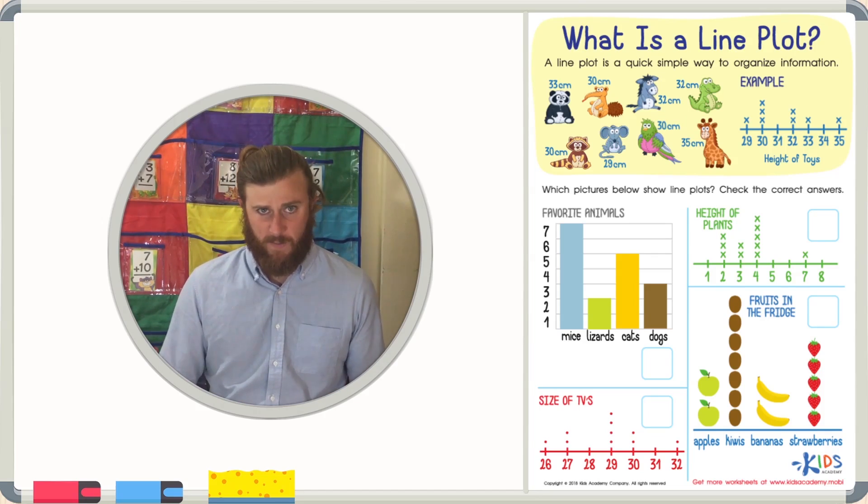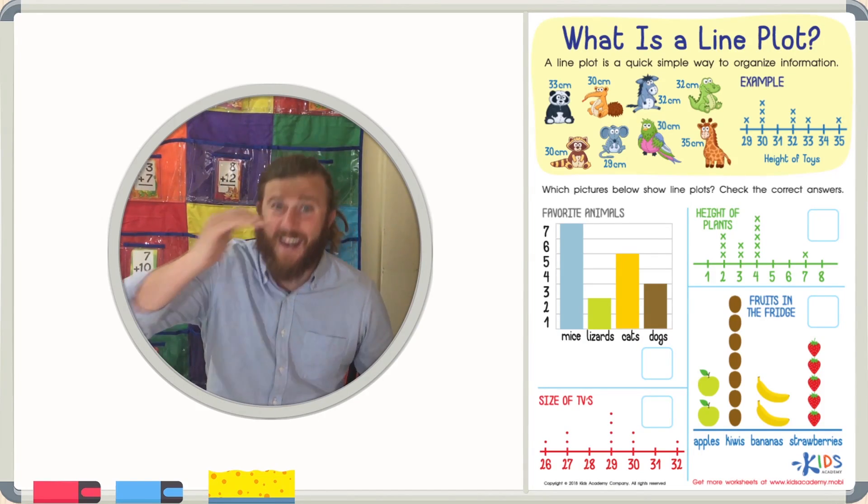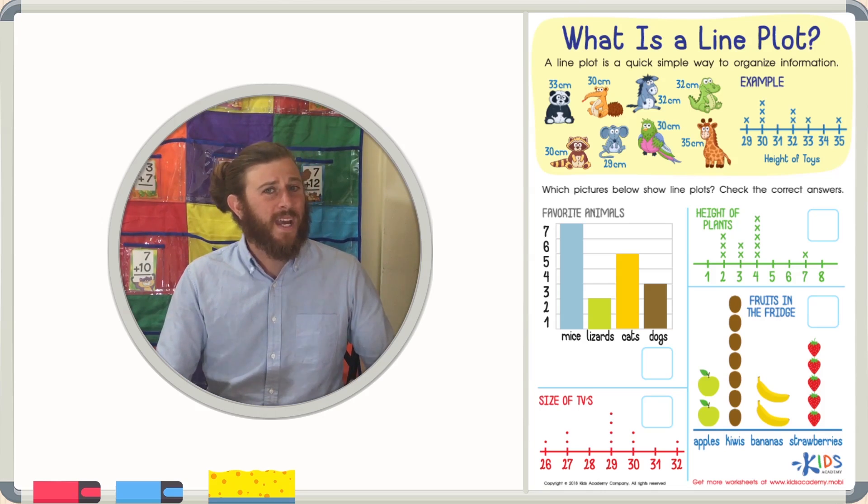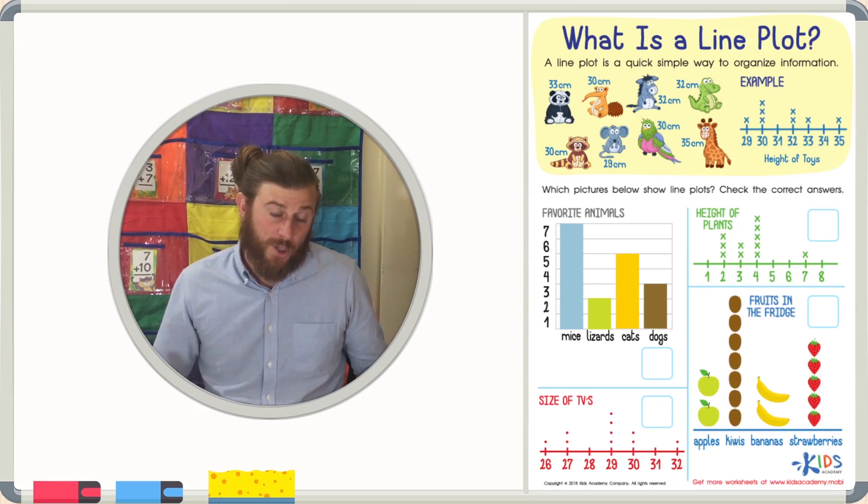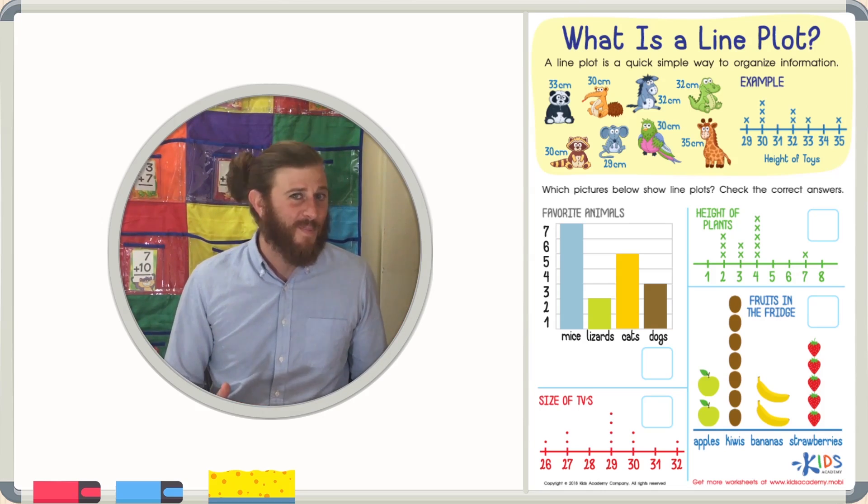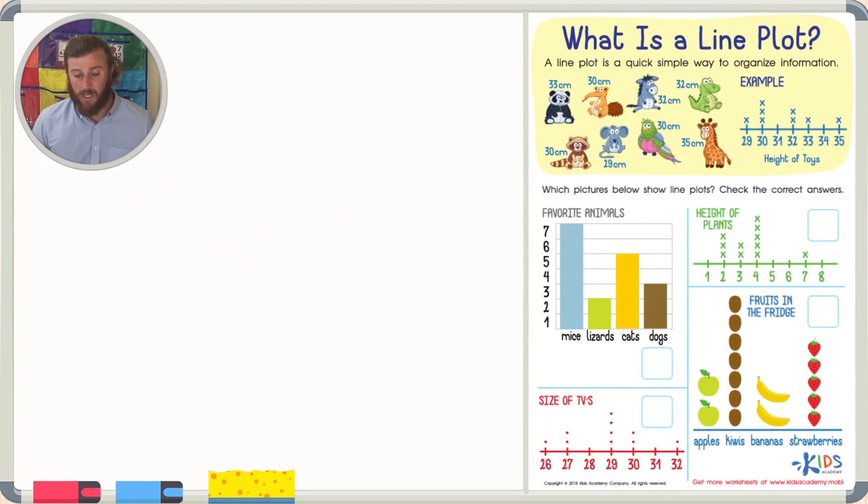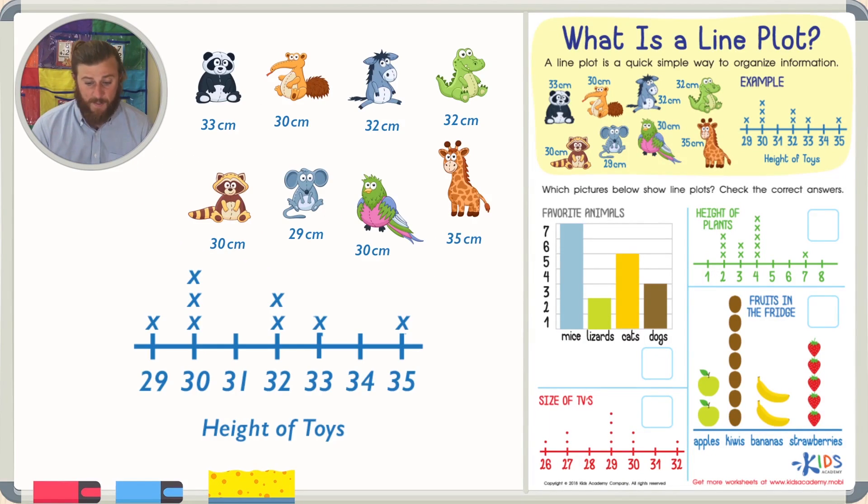Let's take a closer look at a line plot so that way we can easily identify or see what is a line plot and what's not a line plot. So in our example, we have some animals who we also see the heights of each of the animals.